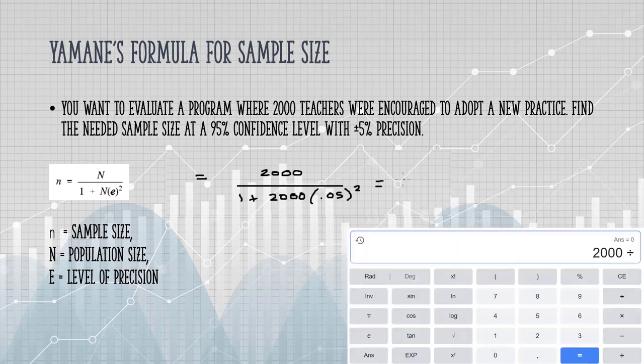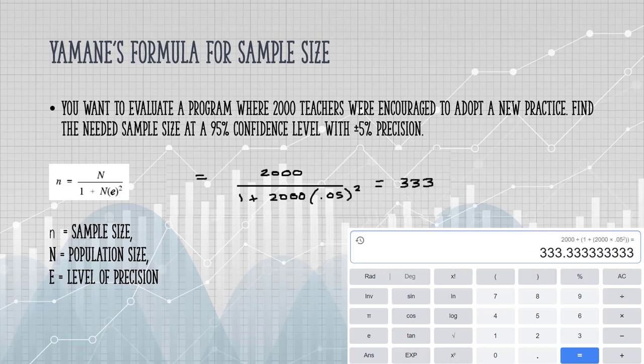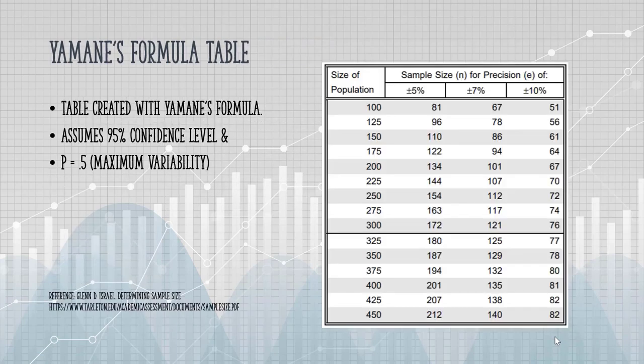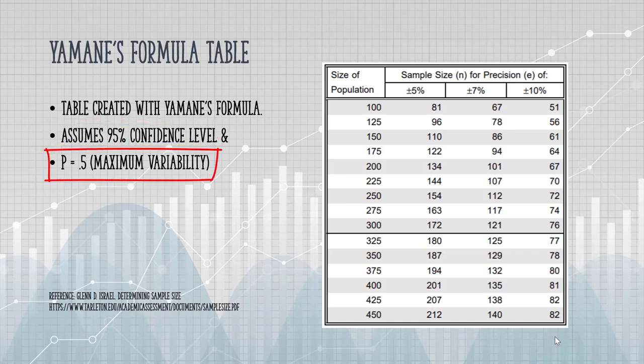If I work this out on a calculator... You can find a few tables out there that are created with Yamane's formula. You can find these in many academic papers, as well as some books on research design. This particular table assumes a 95% confidence level, which is common in the social sciences. It also assumes maximum variability.